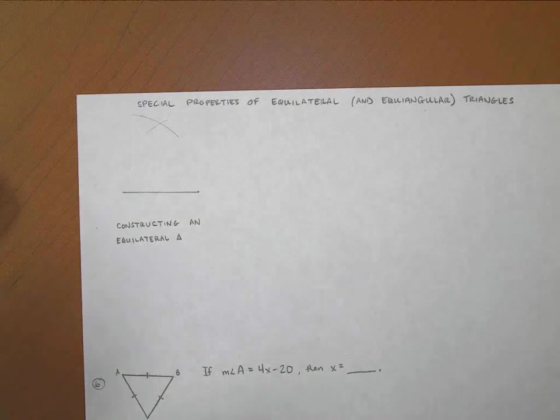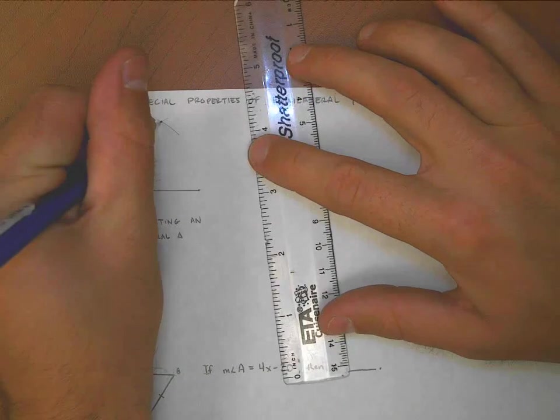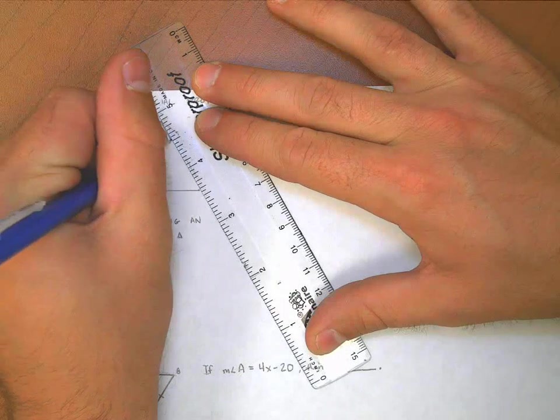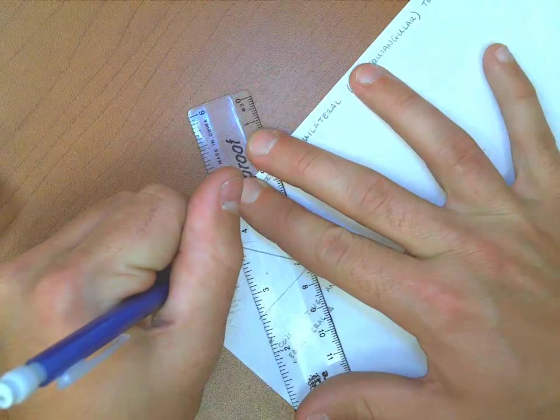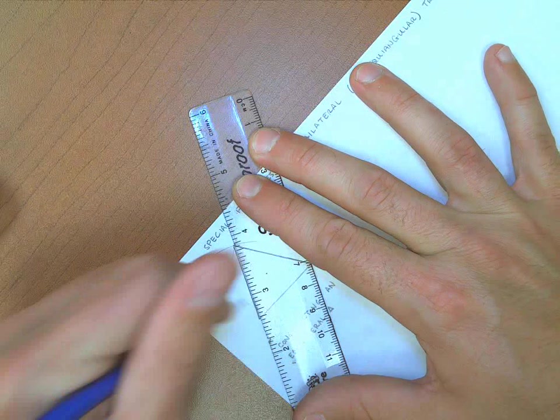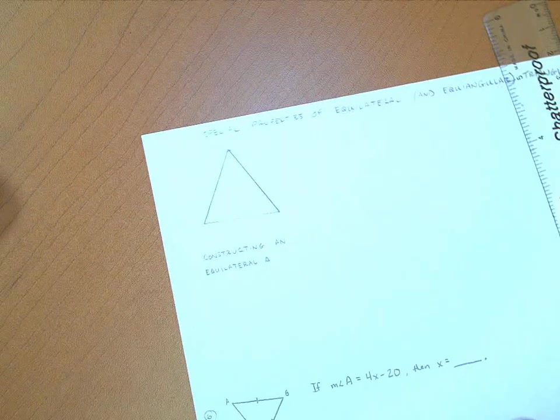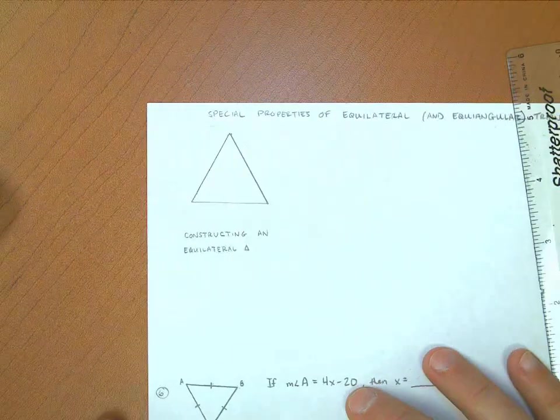Where those lines intersect is going to be the third point, the vertex of my triangle. So now I can go through and take a straight edge, and I can draw a line here, and a line here, and I have an equilateral triangle.